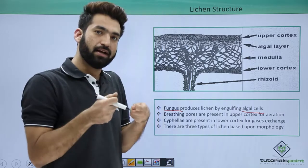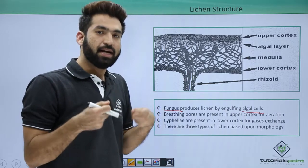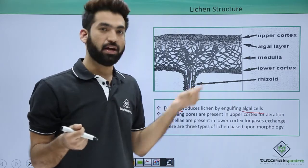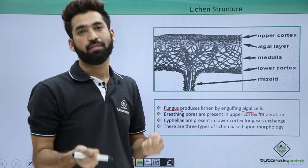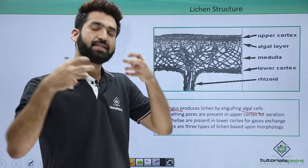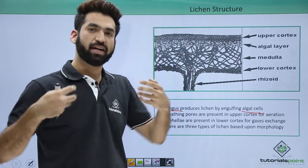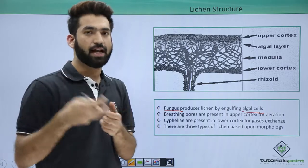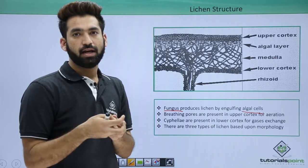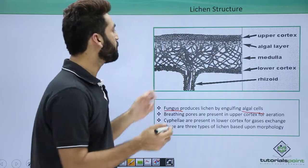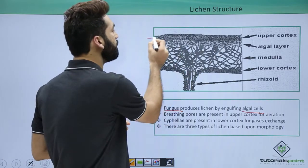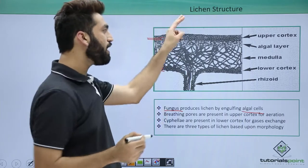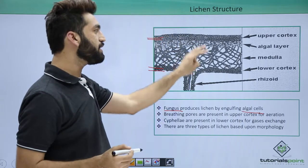When the fungus engulfs the algal cell, this is called a master-slave relationship. It's called a master-slave relationship because the algae are becoming the slaves of the fungus. The fungus has engulfed the algae partner, and they will be sitting like this. You can see this is the upper cortex and this is the lower cortex.